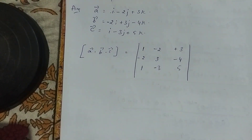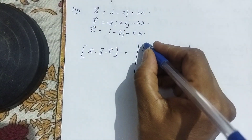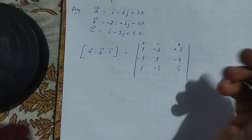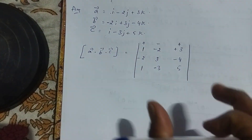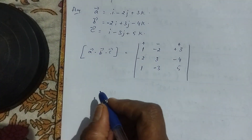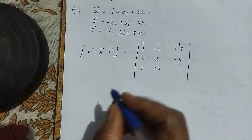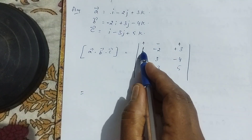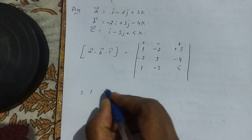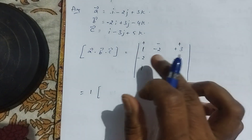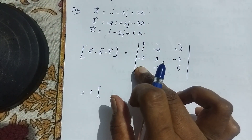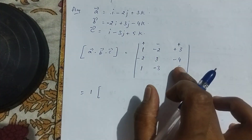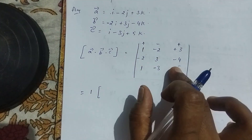Now we expand the determinant. We assign the alternating signs plus, minus, plus along the first row. This is the standard method for evaluating a 3x3 determinant, which you should have learned in previous classes. We now expand along each element of the first row.